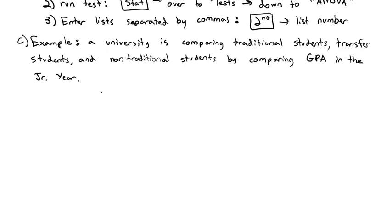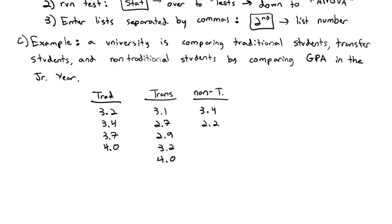Here are their results. The traditional students had GPAs of 3.2, 3.4, 3.7, 4.0. The transfer students had GPAs of 3.1, 2.7, 2.9, 3.2, and 4.0. And the non-traditional students had GPAs of 3.4, 2.2, 2.7, and 2.8.